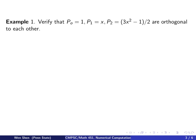So the first example now will be, we'll verify that at least the first three, P0, P1, P2, are orthogonal to each other. So we begin with an observation that P0 and P2, they are even functions, and P1 is odd.